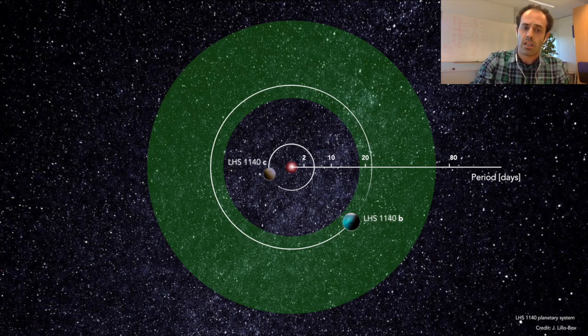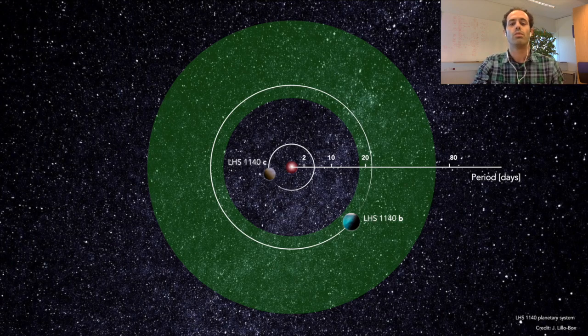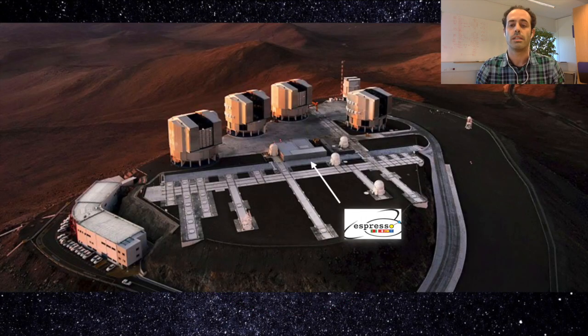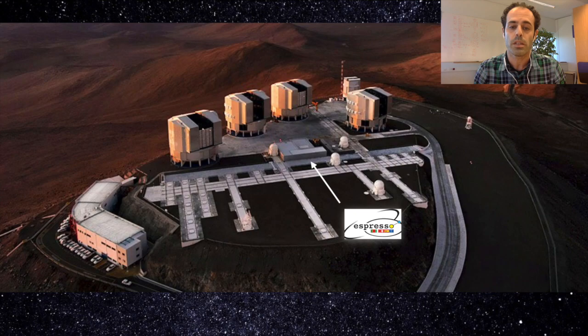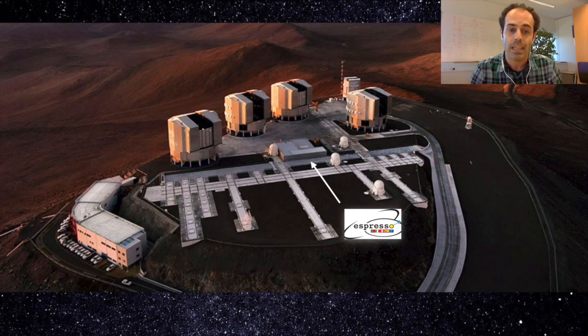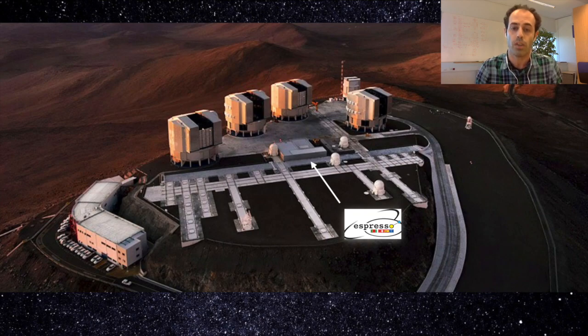Given its interesting properties we decided to further explore the system by using the ESPRESSO instrument located at the Paranal Observatory in the Atacama desert. We obtained more than 110 new radial velocity data points over a time span of 1.5 years, doubling the amount of HARPS epochs.